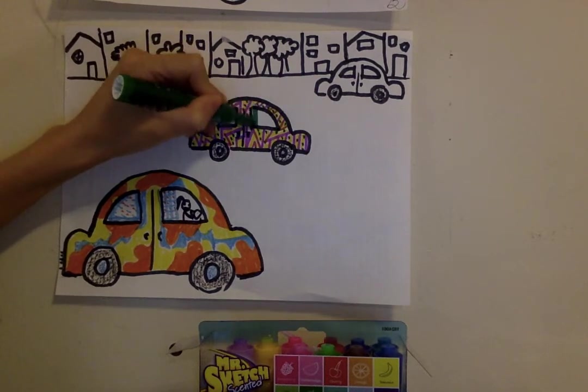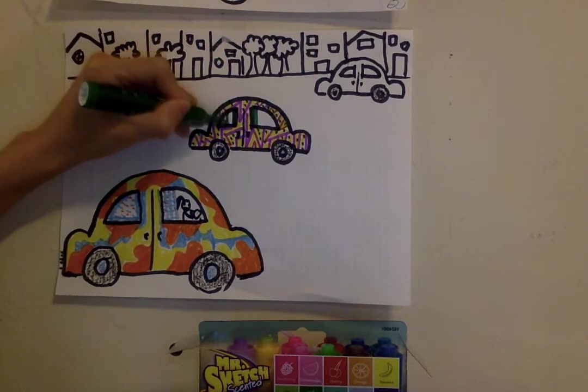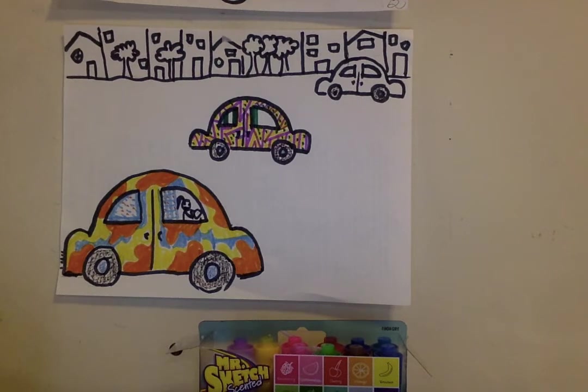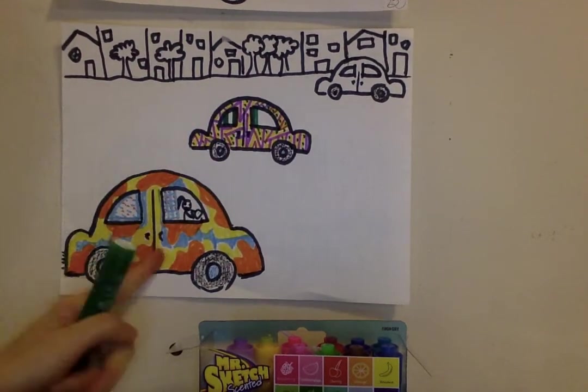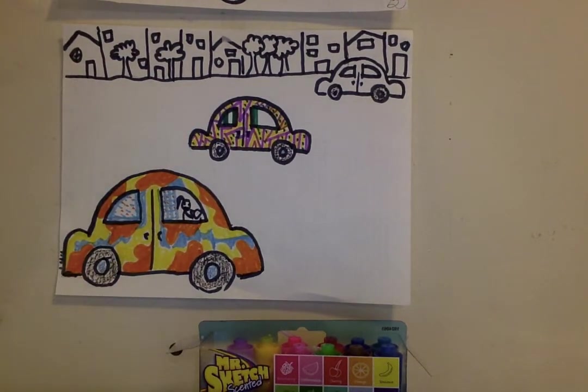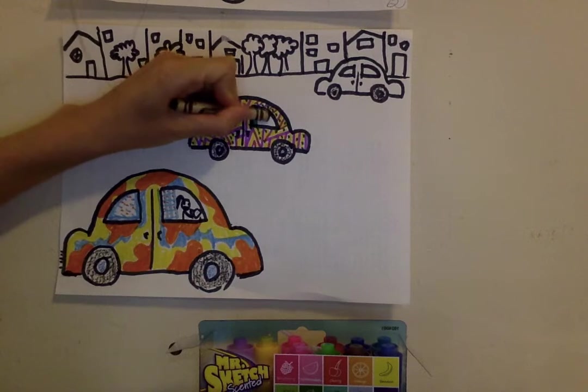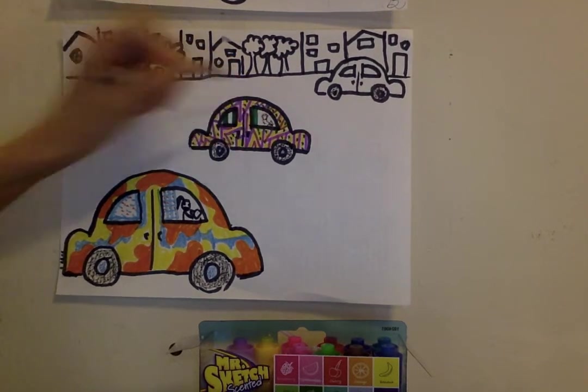And notice, I'm stopping my line when I hit the window. Because I want the window to be separate. It's a separate thing from my car pattern. So, this is very wacky looking. I love it. And I'm going to get another color. I told myself three colors.